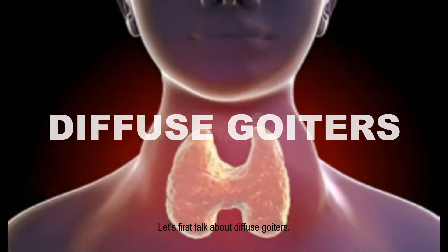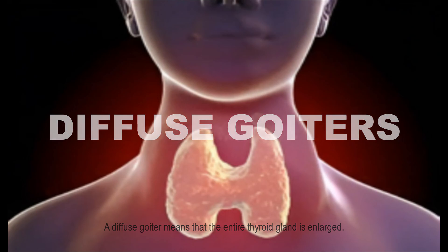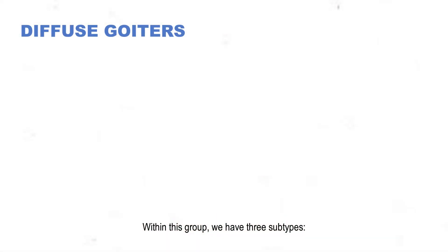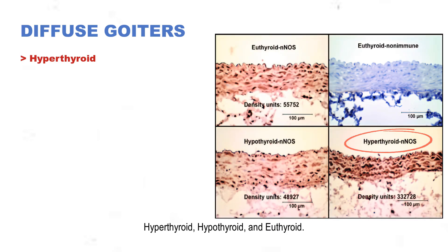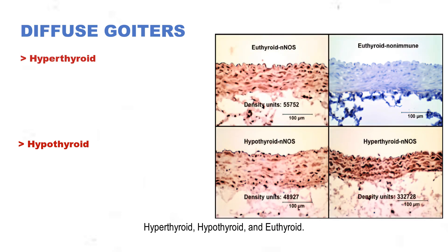Let's first talk about diffuse goiters. A diffuse goiter means that the entire thyroid gland is enlarged. Within this group we have three subtypes: hyperthyroid, hypothyroid, and euthyroid.